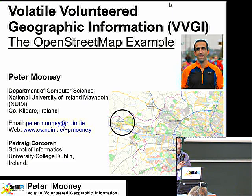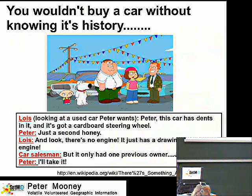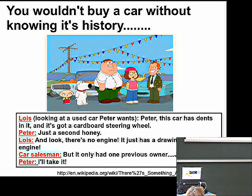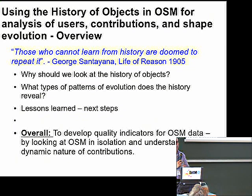Good morning. As my title suggests, I'm going to look at volatility in VGI, specifically at the example of OpenStreetMap. To start off with something humorous: you wouldn't buy a second-hand car without knowing its history, and you wouldn't buy a new car without knowing its history either. Just looking from the outside may not always give you a clue to how good the product is.